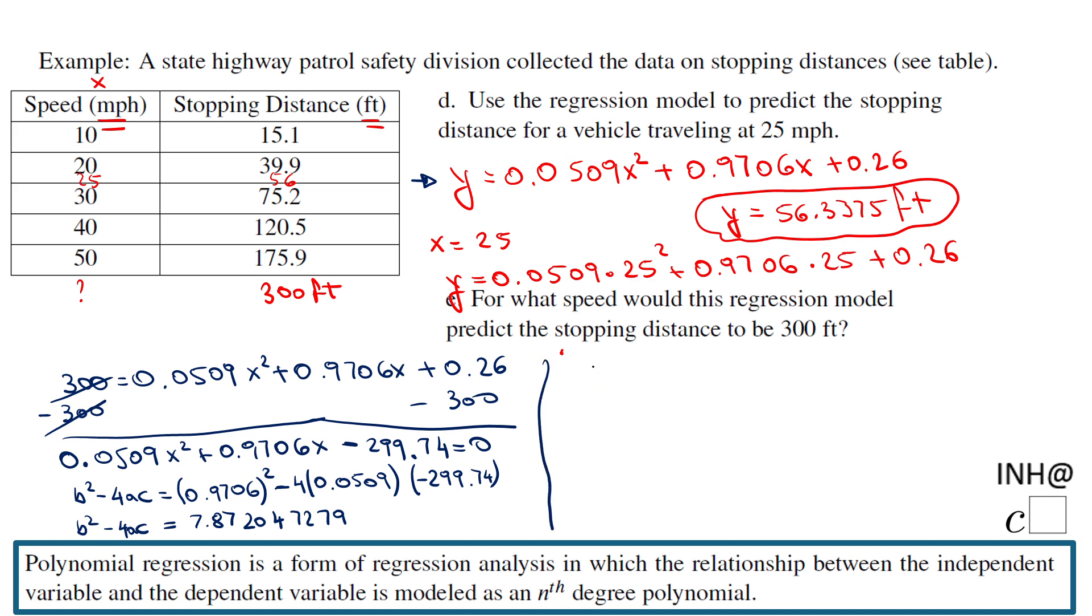Now we can move to the next part. If you remember, in the quadratic formula we have x equals negative b plus or minus the square root of this discriminant b square minus 4ac over 2a. Okay, and what do we get here? The negative b will be negative 0.9706 plus or minus - let me take the square root of that - 7.87, let me put it like that, over 2a. Two times a is 0.0509.